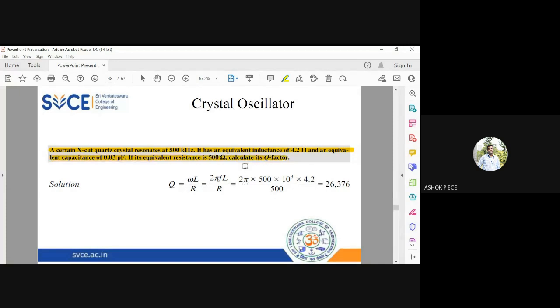Calculate the Q factor. Q is omega L by R. Omega is 2 pi F. F is given 500 kilohertz. L value 4.2. R value is given.